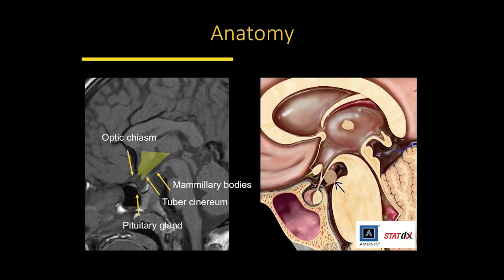This is a schematic of the hypothalamic hamartoma — one of the pedunculated types, attached to the tuber cinereum region and sticking down into the suprasellar system. The sella is the area where the pituitary sits, and everything above it we call suprasellar. You may have heard this term many times because lesions in the hypothalamus often extend into the suprasellar region.